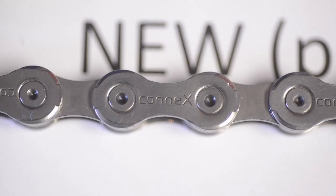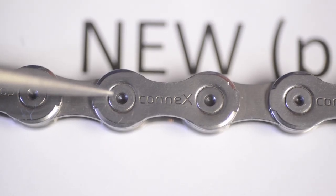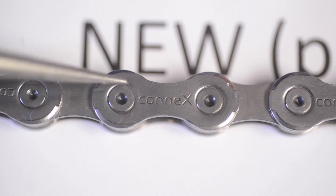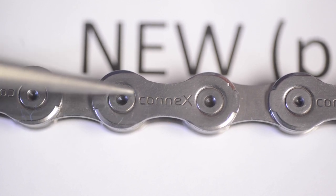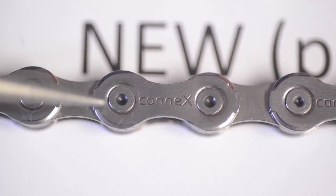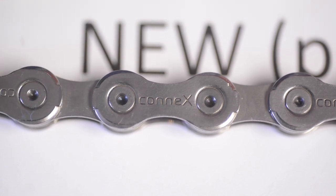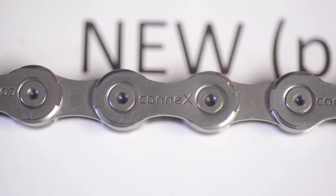Another feature of the new Connex chain is radial riveting. Radial riveting distributes the force of the rivet more evenly across the entire circumference of the rivet and outer plate connection. This ensures longer life and a stronger joint.